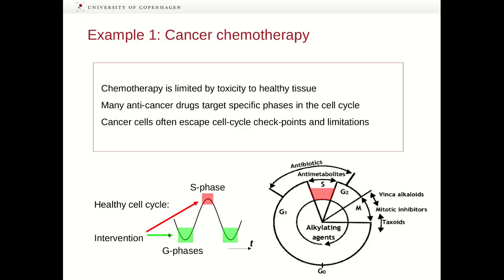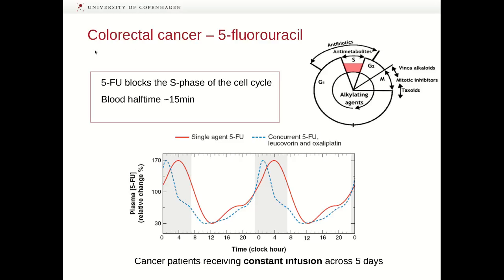In colorectal cancer, an often applied chemotherapeutic agent is 5-fluorouracil, which blocks the S phase of the cell cycle. This drug has a half-life in the blood of approximately 15 minutes. In this graph, you can see the concentration of 5-fluorouracil in cancer patients that received constant infusion of this drug across 5 days. Note the very pronounced circadian oscillations upon application of 5-fluorouracil.